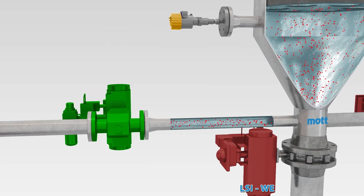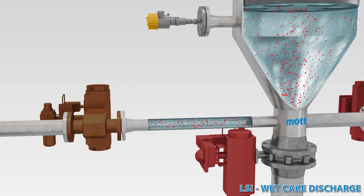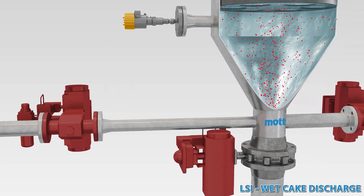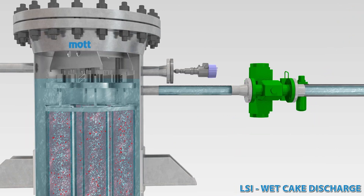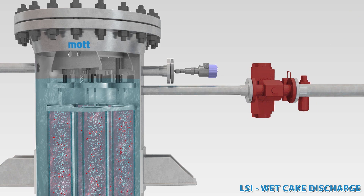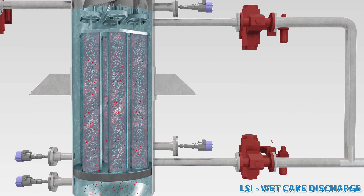For applications requiring greater solids concentration in backwash, Mott employs the wet cake discharge. For this backwash type, process filtrate is drained from the vessel.